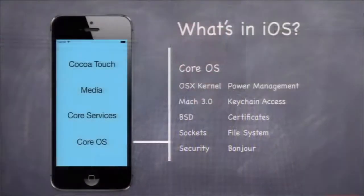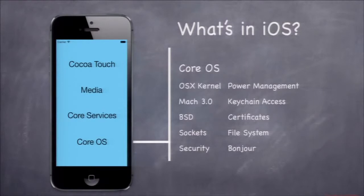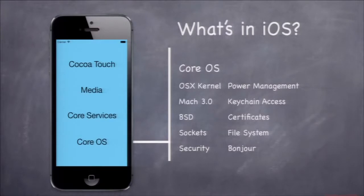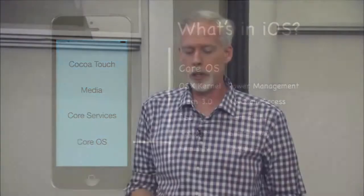I've divided iOS into four groups: Core OS, which is the stuff close to the hardware; Core Services, an object-oriented layer on top of that; Media, because these devices are essentially iPods with a phone or big screen — media is really important; and finally Cocoa Touch, which is the UI layer — all the buttons, switches, and things like that.